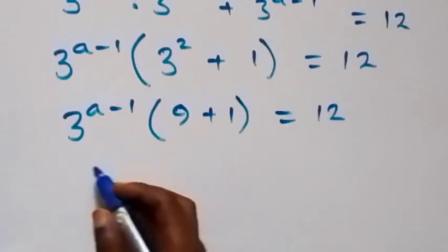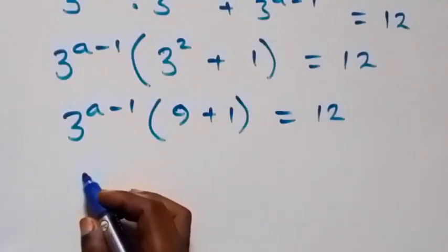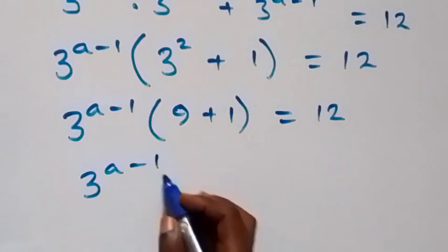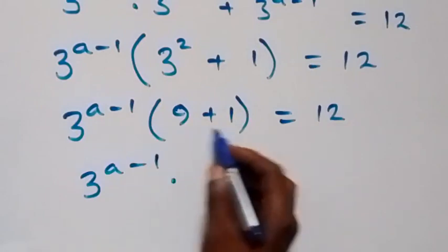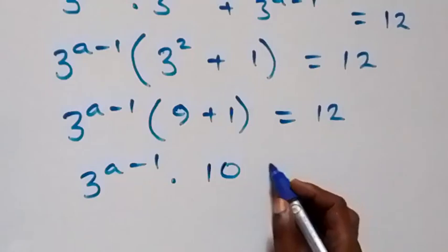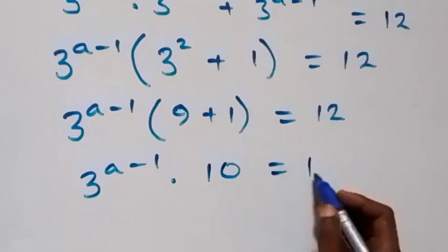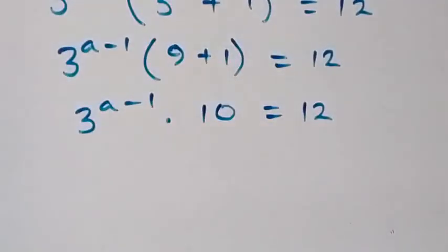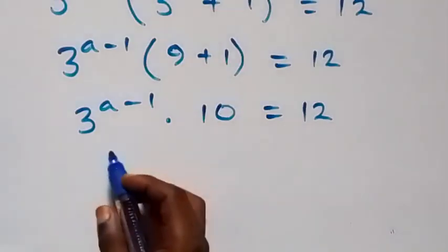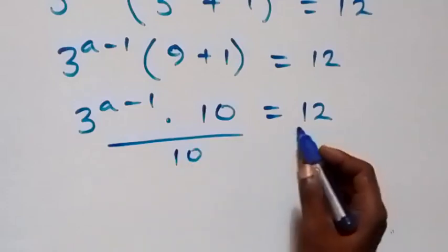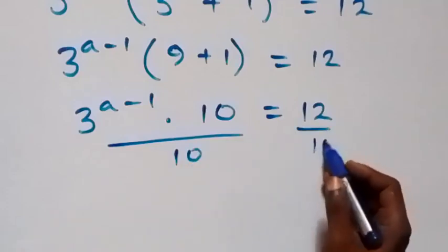That is, what we have here becomes 3 raised to power a minus 1, times 9 plus 1, that's 10, equals 12 on this side. The next step, we divide both sides by 10 — divide here by 10, and also divide this side by 10.